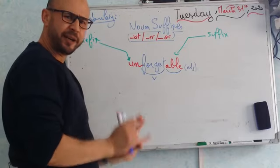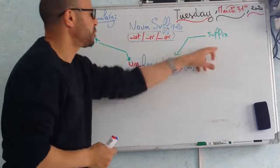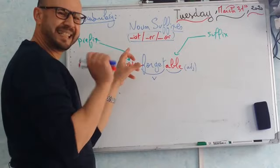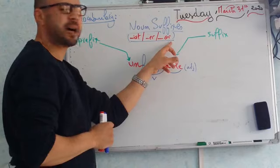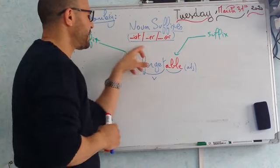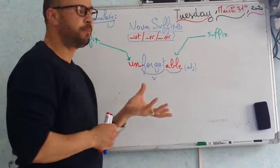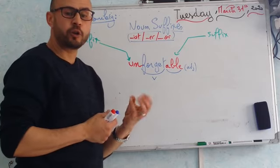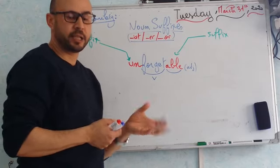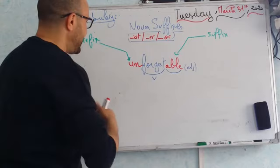Today, inshaAllah, we're going to focus on suffixes. Exactly on the I-S-T suffix, E-R suffix, and O-R suffix. These three suffixes are used to form nouns, asmaq. And especially, nouns of doers of action. We'll see the example.